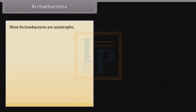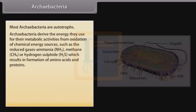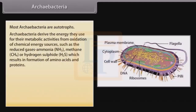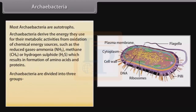Archaebacteria: Most archaebacteria are autotrophs. They derive energy for metabolic activities from oxidation of chemical energy sources such as reduced gaseous ammonia (NH3), methane (CH4), or hydrogen sulfide (H2S), which results in formation of amino acids and proteins. Archaebacteria are divided into three groups: Methanogens, Thermoacidophiles, and Halophiles.